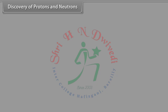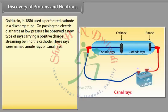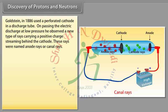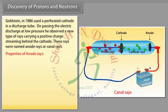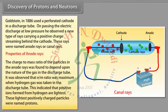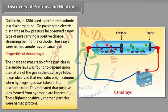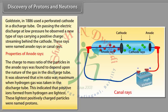Discovery of protons and neutrons: Goldstein in 1886 used a perforated cathode in a discharge tube. On passing electric discharge at low pressure, he observed a new type of rays carrying a positive charge streaming behind the cathode. These rays were named anode rays or canal rays. The charge to mass ratio of the particles in the anode rays was found to depend upon the nature of the gas in the discharge tube.